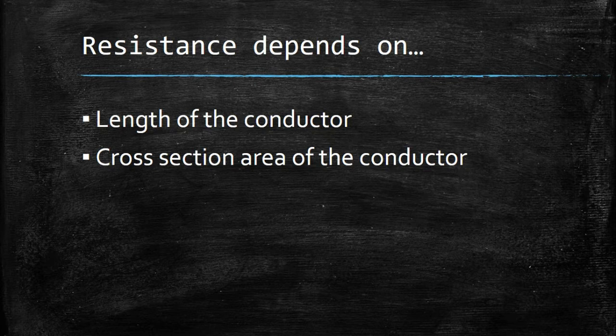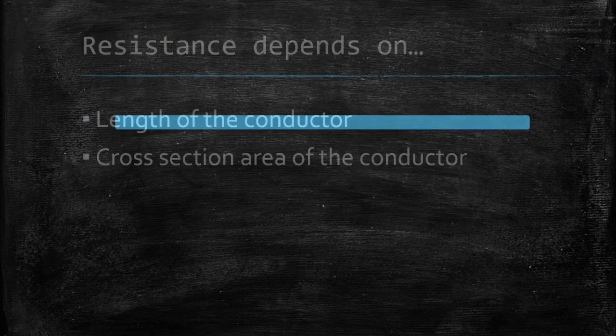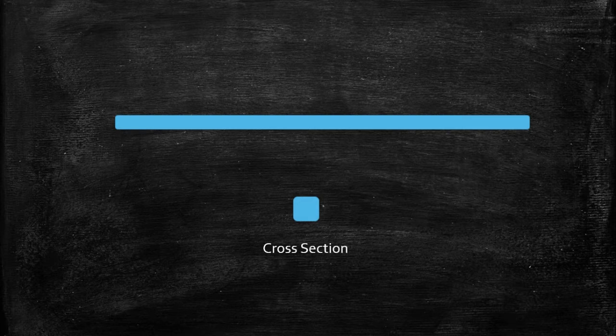They have used the term cross-section area but don't really know what it means. To understand it, if you are looking at a conductor from the front side, what you see is the cross-section area. Resistance is inversely proportional to this cross-section area — if you increase the cross-section area, the resistance decreases, and vice versa.